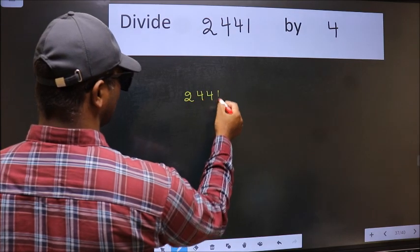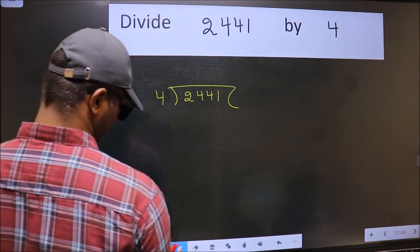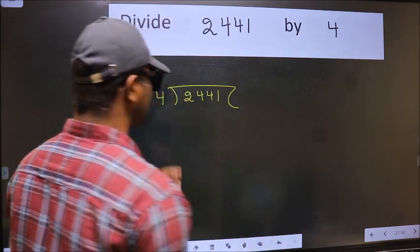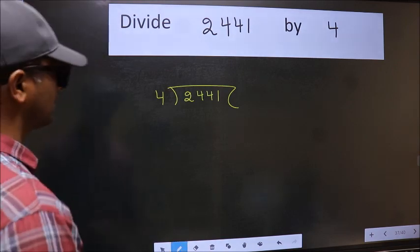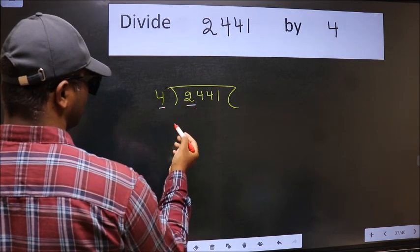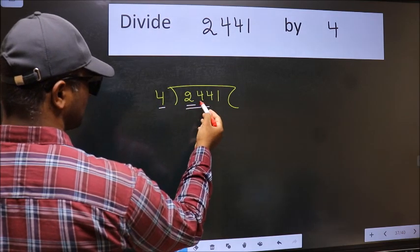2, 4, 4, 1, and 4 here. This is your step 1. Next, here we have 2 and here 4. 2 is smaller than 4, so take 2 numbers: 24.